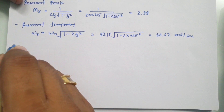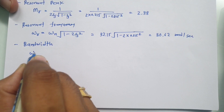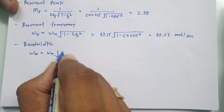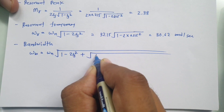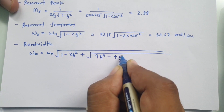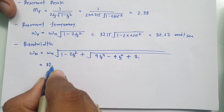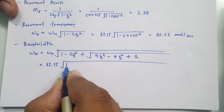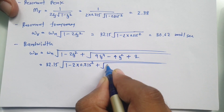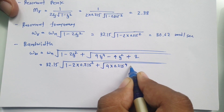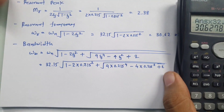For bandwidth of a second-order system, the formula is: ωb = ωn × √[(1 − 2ζ²) + √(4ζ⁴ − 4ζ² + 2)]. Placing values: ωb = 32.15 × √[(1 − 2 × 0.215²) + √(4 × 0.215⁴ − 4 × 0.215² + 2)].